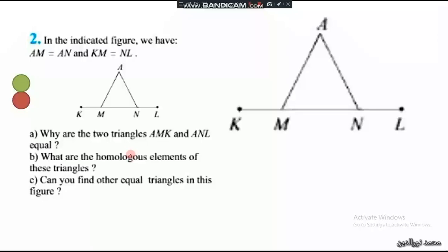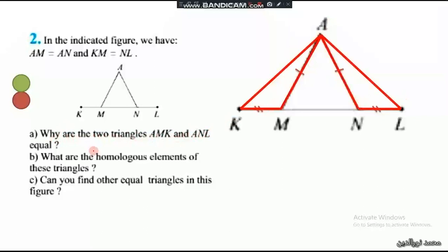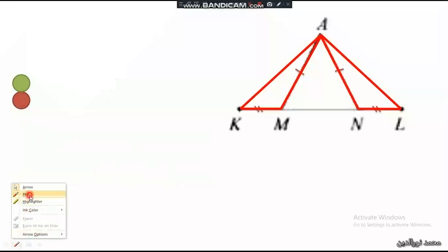Problem 2 on page 49. In the indicated figure, we have AM equals AN, so these sides AM and AN are equal, and KM equals NL. The question is: why are the two triangles AMK and ANL equal? We have to prove that they are equal triangles. It's obvious that AM and AN are equal, so find side equal to side, and then KM and NL are equal, so that's side and side.